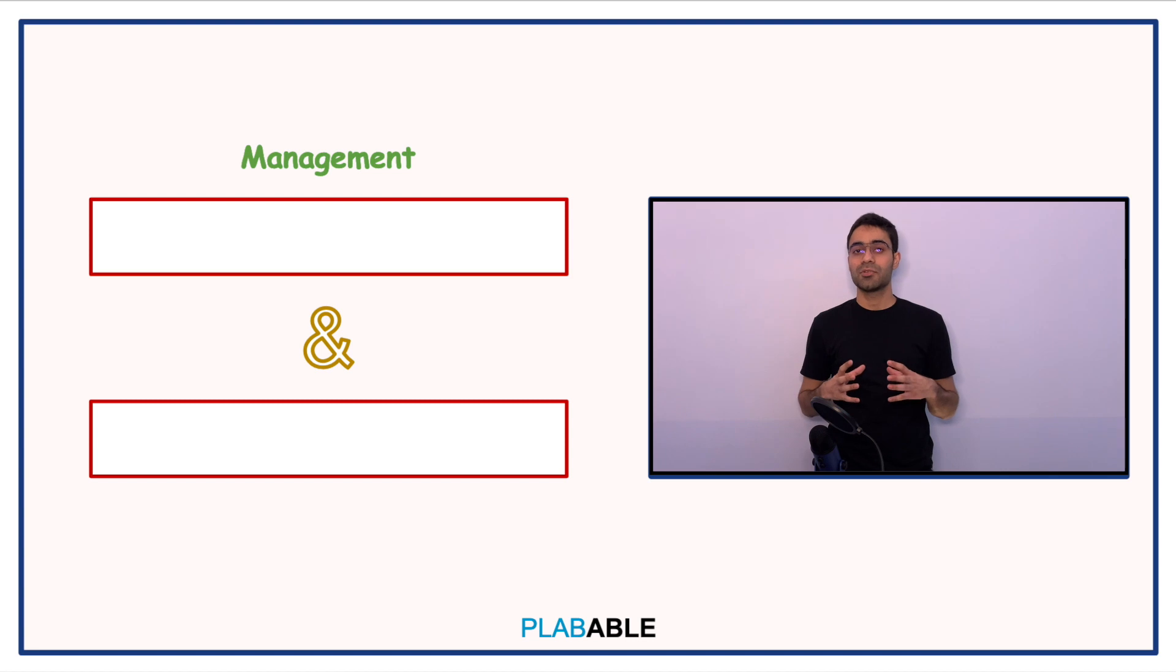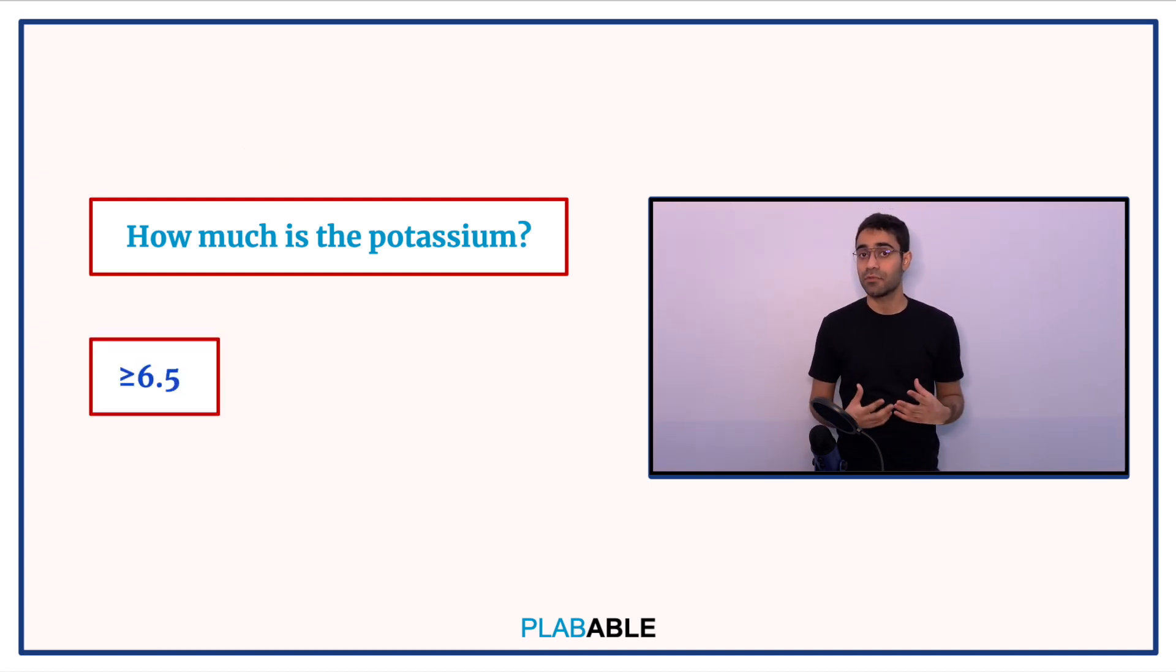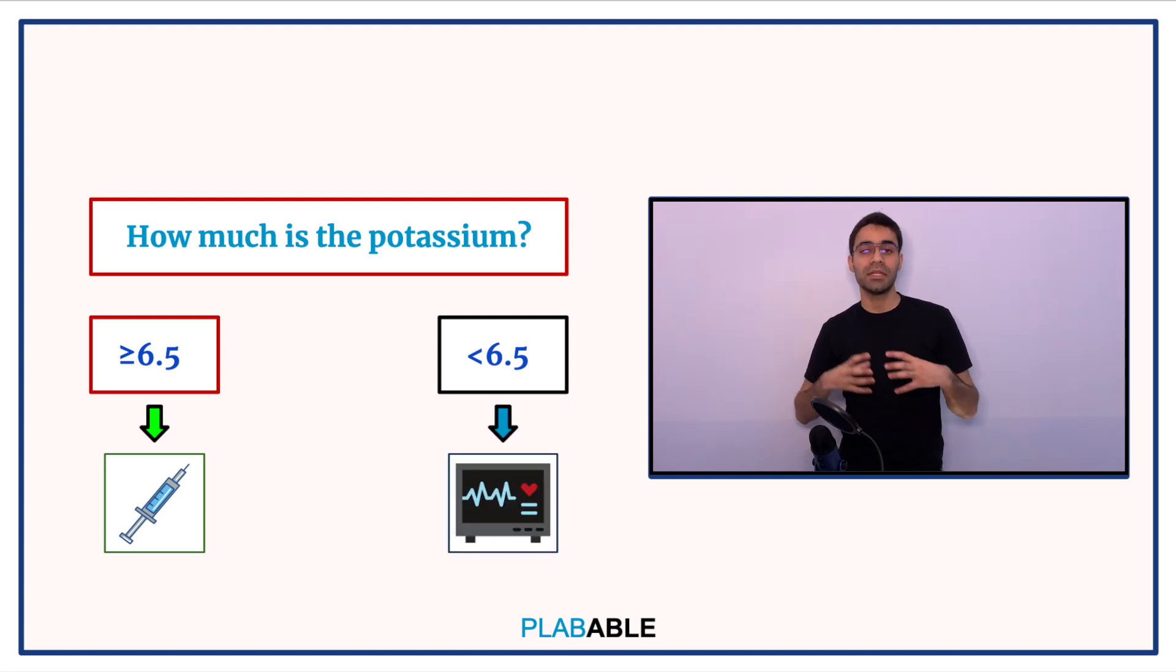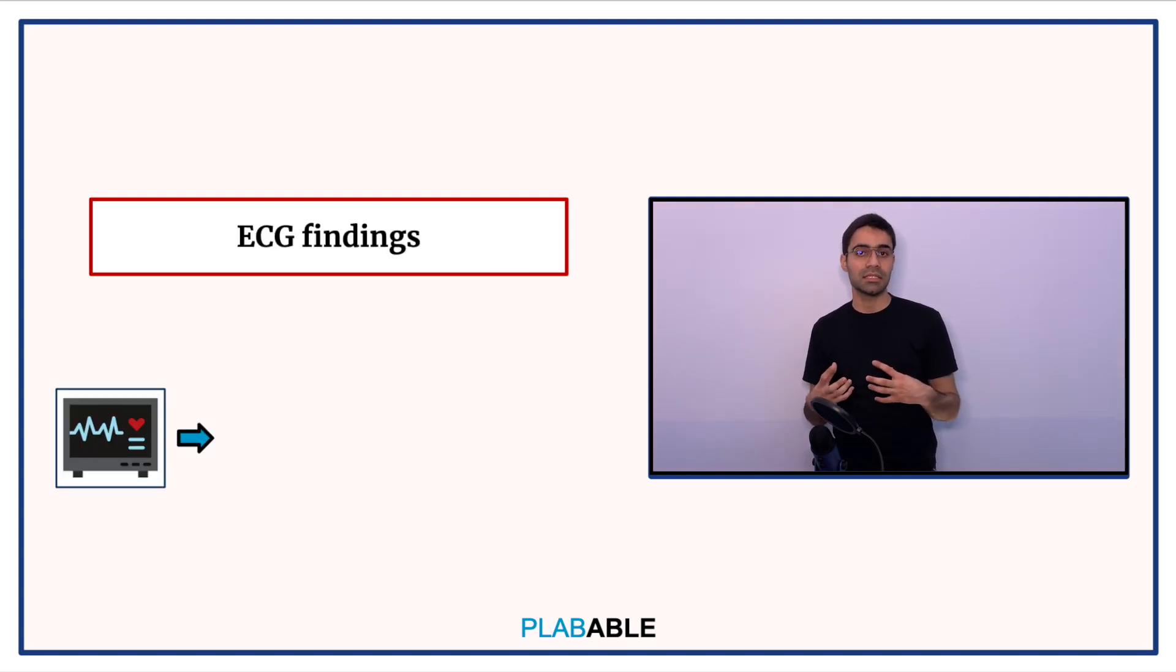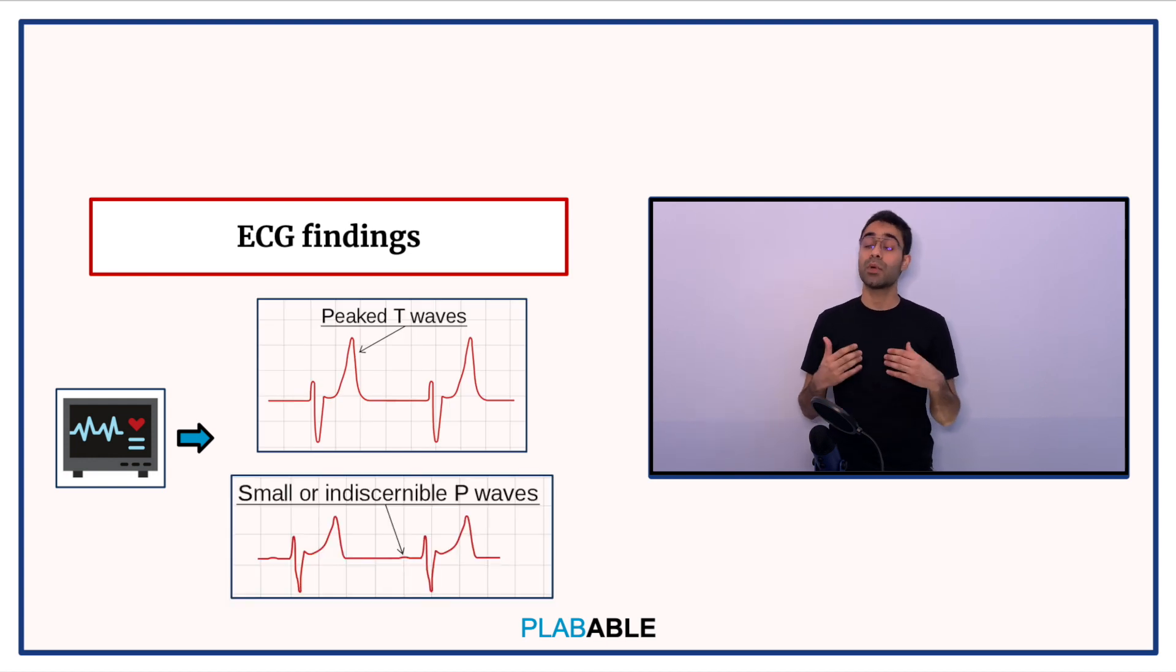The management of hyperkalemia depends on potassium levels and ECG changes. If there's a patient who has potassium 6.5 or more, we treat them regardless of ECG changes. But if the levels are less than 6.5, we perform an ECG as an initial investigation and look for ECG changes such as tall tented T waves, small P waves and widened QRS. If there are changes, we treat this patient.